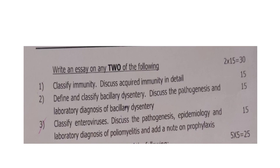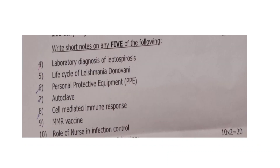Next, we will move on to the short notes section — 5 marks each. Out of 7 questions, you have to answer 5, so 5 into 5 equals 25 marks. Question 4: laboratory diagnosis of leptospirosis. Question 5: life cycle of Leishmania donovani. Question 6: personal protective equipment. Question 7: autoclave. Question 8: cell mediated immune response. Question 9: MMR vaccine. Question 10: role of a nurse in infection control.